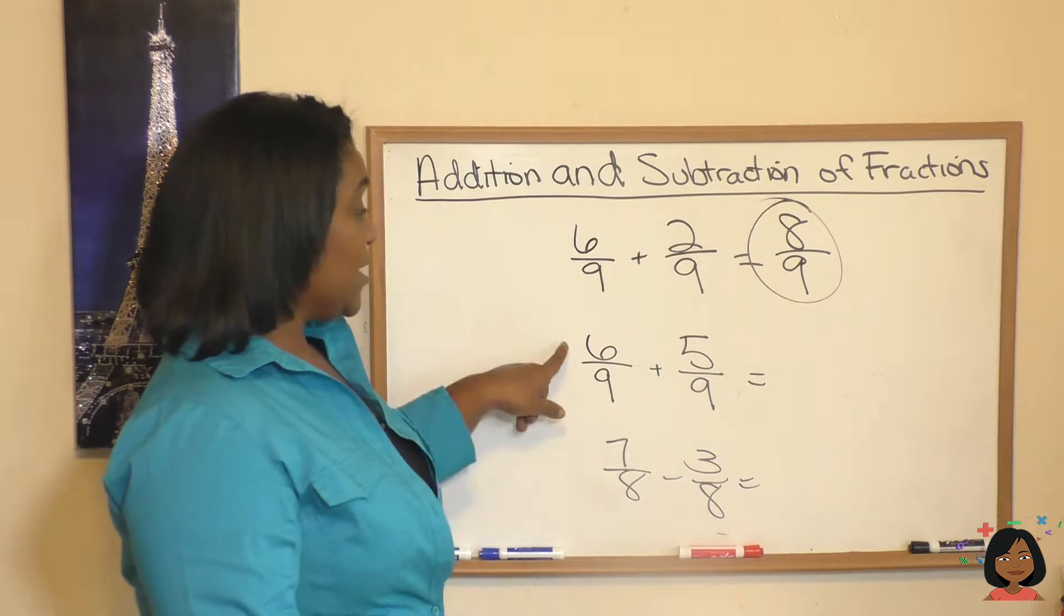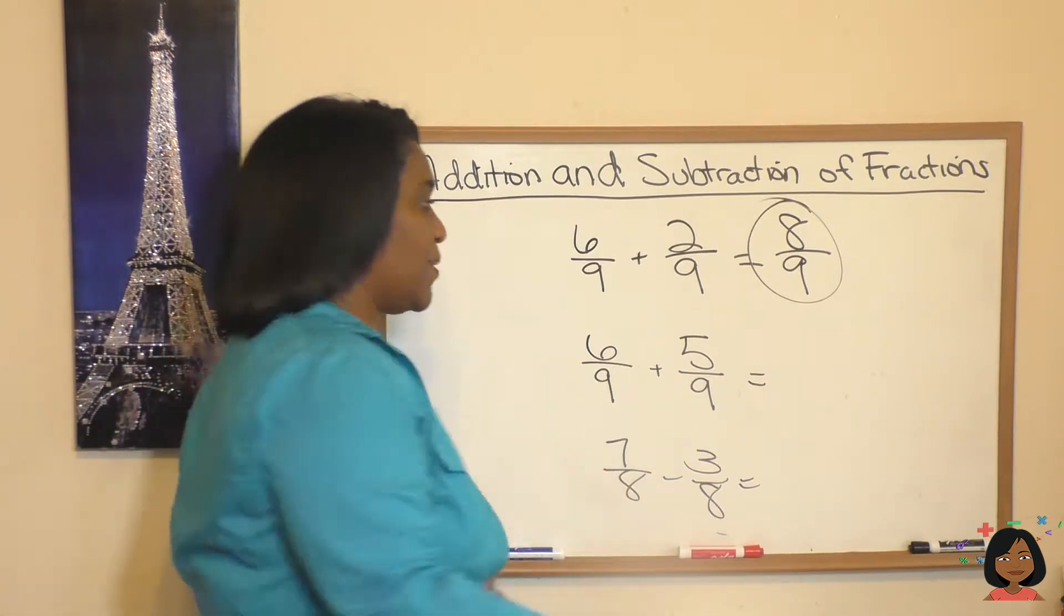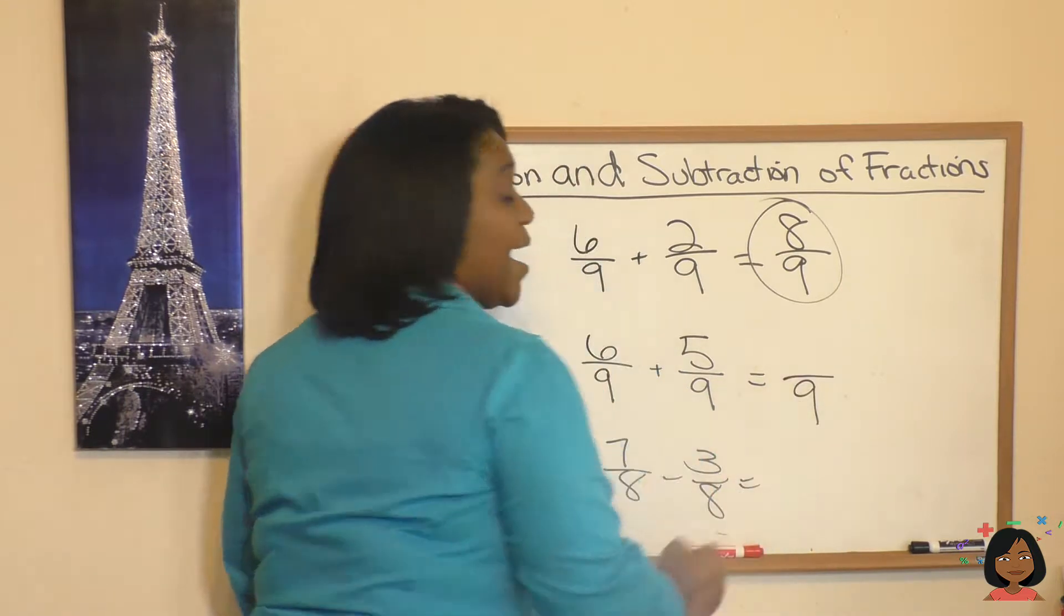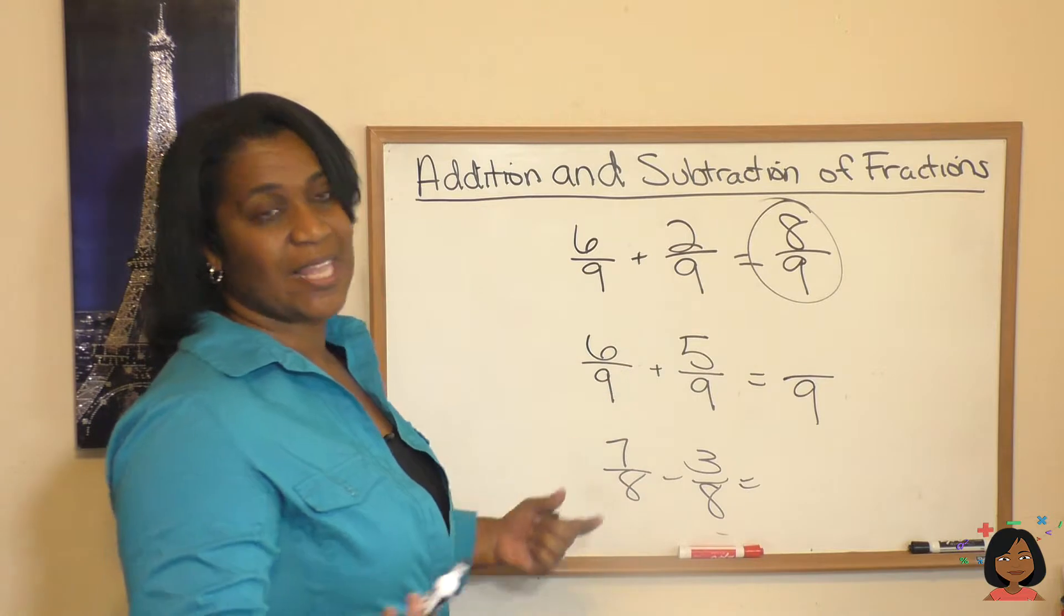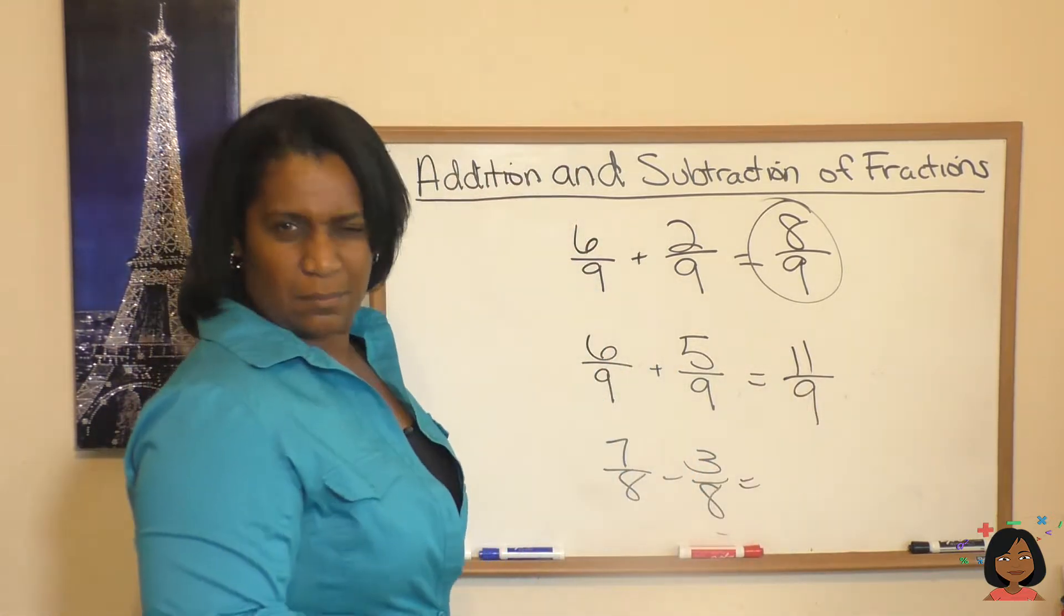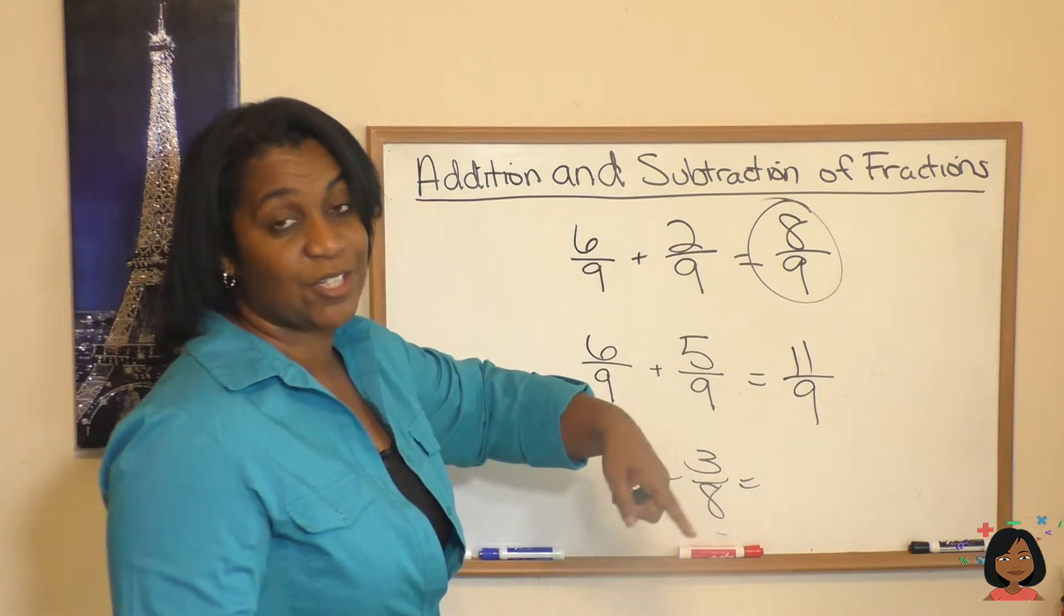Try this problem. 6 ninths plus 5 ninths. Again, same denominator, so we know our denominator stays the same. And the rule is we can add the numerator. 6 plus 5 is 11. But do we keep it like this? What's this called? It's an improper fraction.